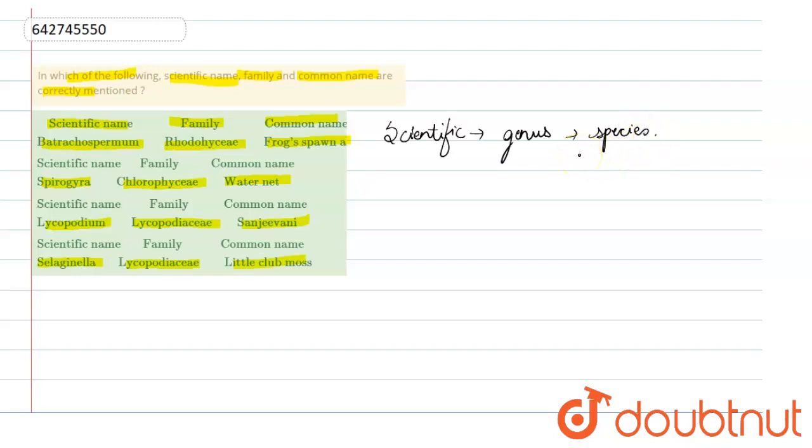It is always written in italics and the first letter of the genus name is always capitalized. So a scientific name is basically a two-word name which is unique to the particular organism, unlike the common name where there can be several different common names.